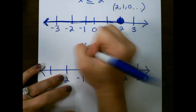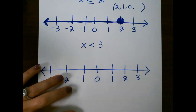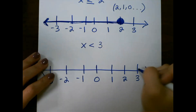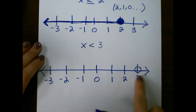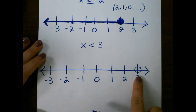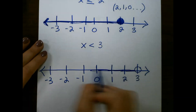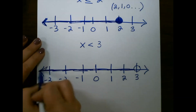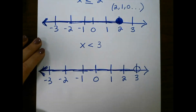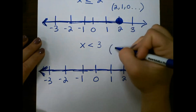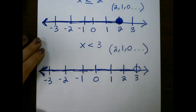What about this one? X is less than 3. Our circle is going to go on 3, and since it's less than, 3 is not included in our solution set, so it stays as an open circle. And we shade everything to the left — all of the numbers that are less than 3. So our solution set could include 2, 1, 0, and so forth.